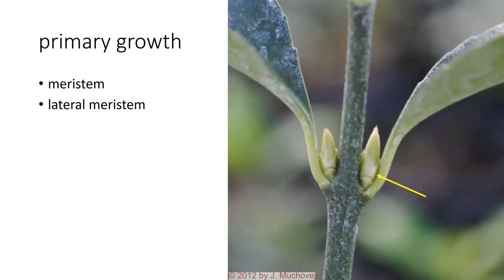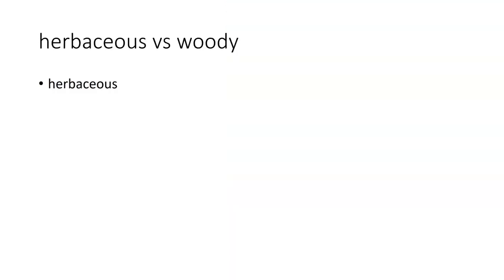If you have something like a pine tree, it only has one stalk — it's got no lateral meristems. This plant is actually a type of shrub and it will grow out from there very quickly.